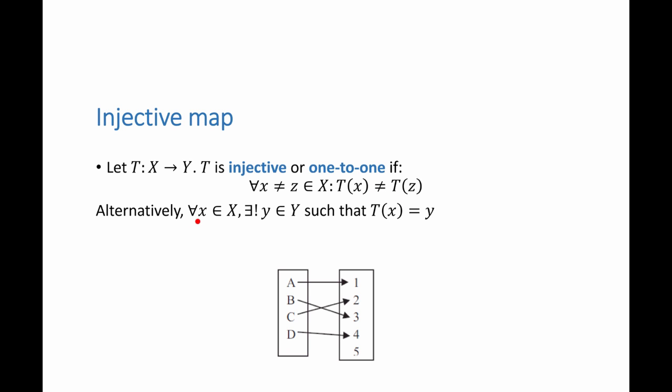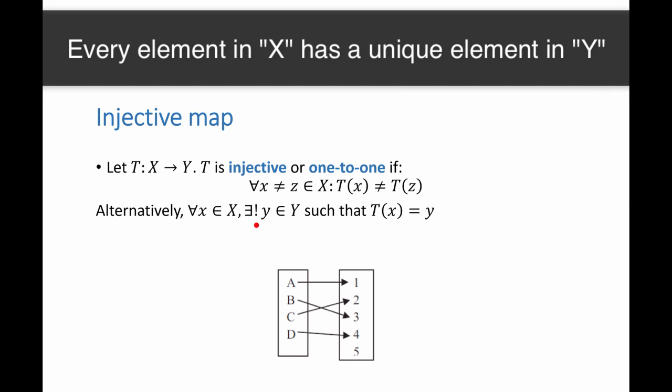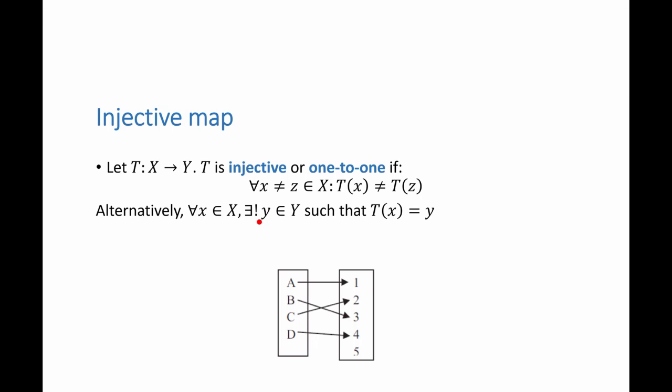Alternatively, we can say that every element in x has a unique element in y such that the image of x is equal to y. And so the uniqueness here of the image is what makes this map injective.